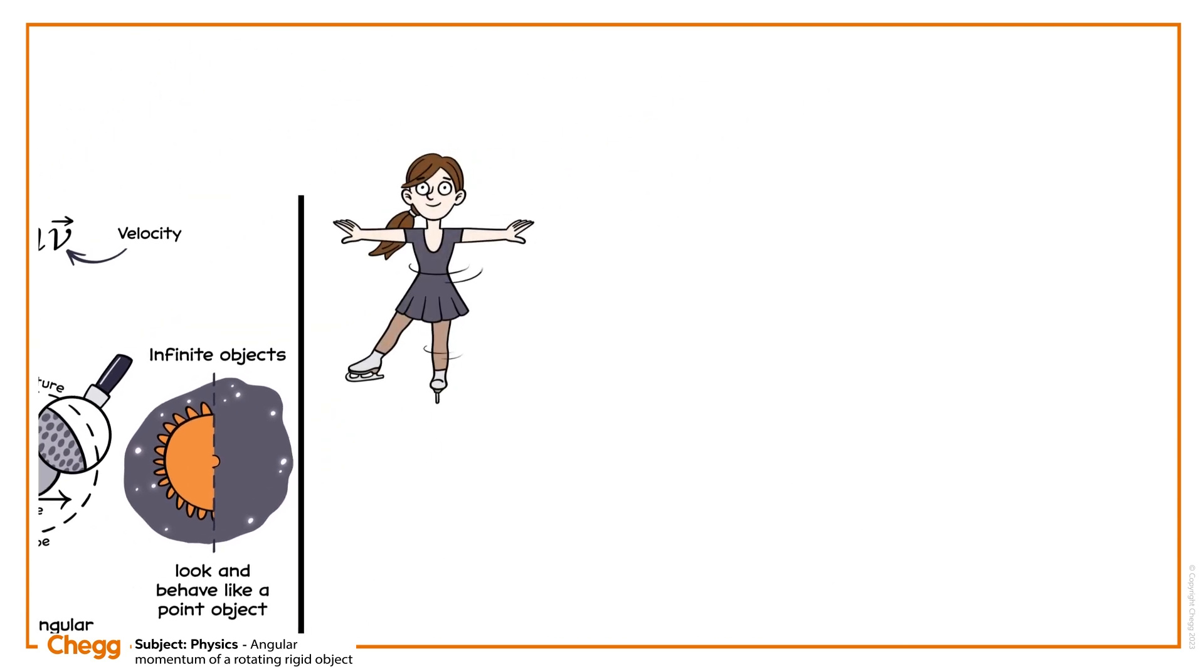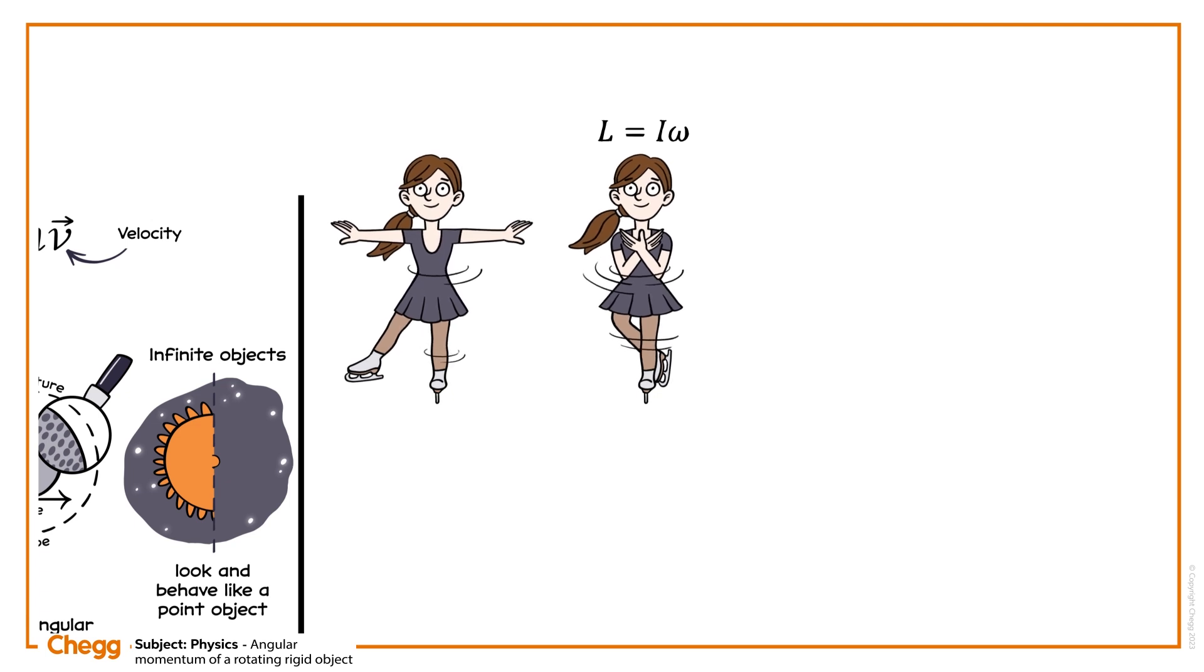Think back to that figure skater we saw at the beginning. Applying this new equation, L equals I omega, it makes sense that she sped up when she brought her arms to her chest. Given that no outside force is applied, the angular momentum is conserved.